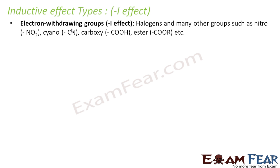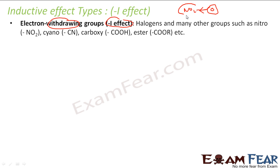There are two groups: electron-withdrawing and electron-donating. The electron-withdrawing group causes the minus I effect — it withdraws electrons from the system. For example, a group attached to benzene that pulls electrons toward itself creates a minus I effect. Think of it simply: minus means withdraw, plus means add. Plus I means the group is adding electrons; minus I means it is withdrawing electrons.